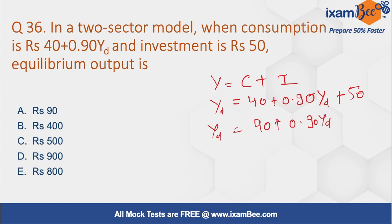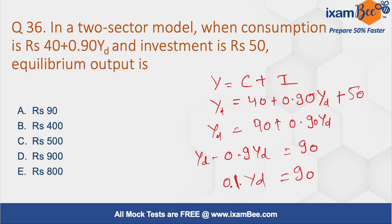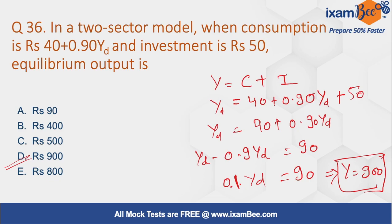Solving this, 0.1 Y_D equals 90, so income equals 900. The equilibrium output is 900, so the right answer for this question is D. It is a very simple, easy, and direct question that can come in one mark.